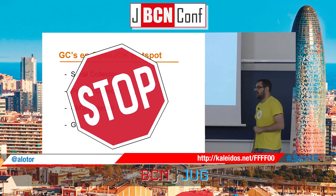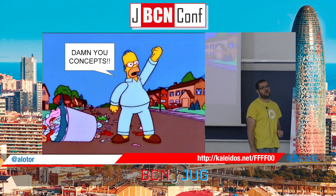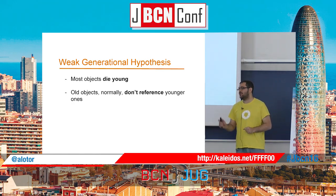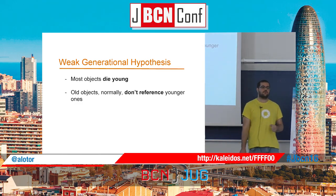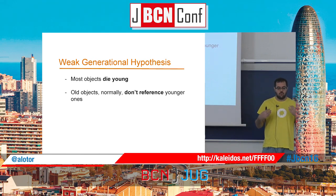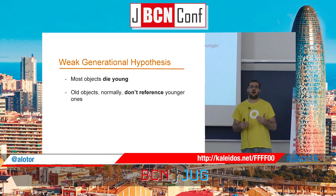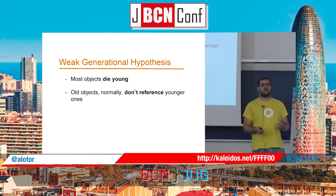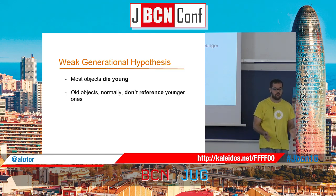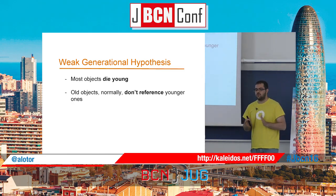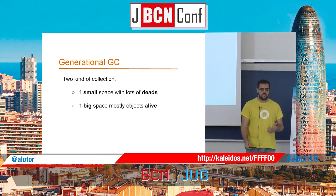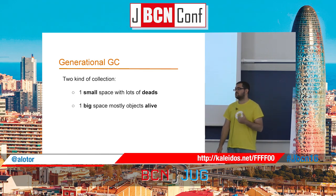There are four garbage collectors in the JDK, but before I talk about them I need to cover general concepts. The first is the weak generational hypothesis: most objects in an object-oriented language are short-lived, and old objects usually don't reference young objects. There are a lot of very short-lived objects and very few old objects. Based on this hypothesis, they defined what is called a generational GC.